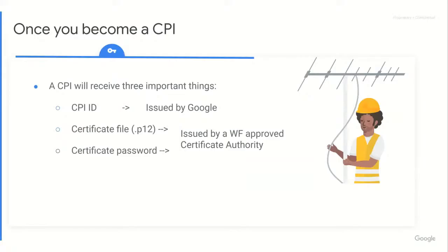You get three important things: the CPI ID, which is like your ID number; the certificate file, an actual file which ends in .p12; and the certificate password. That file has a password in order to activate it, and the file and password are issued by a WinForum-approved certificate authority. The CPI ID comes from Google, or whoever your TPA is — whoever certified you as a CPI. This information is all true for Google SaaS specifically.